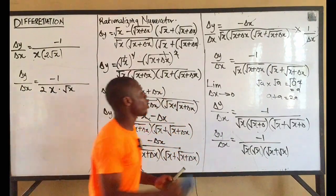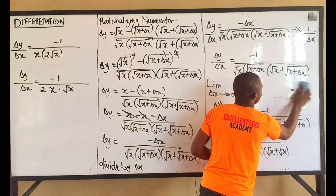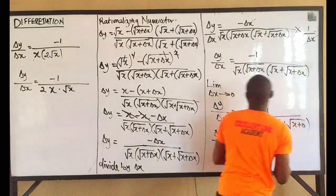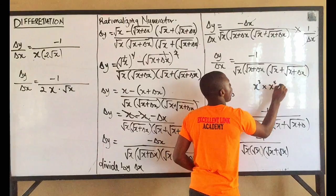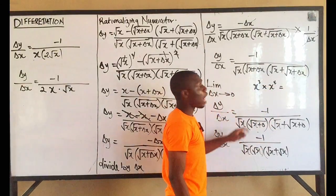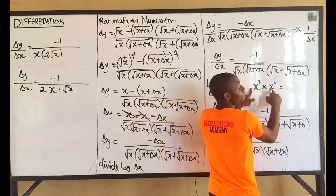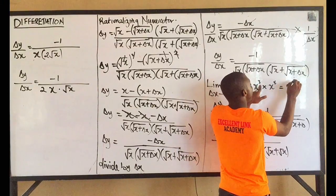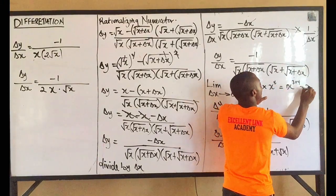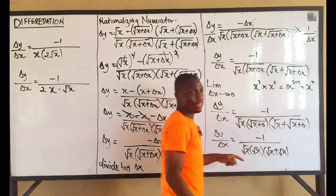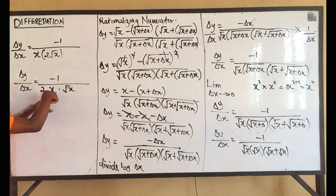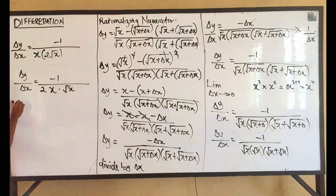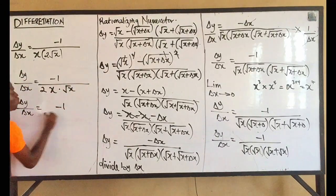From the idea of indices: x times root x — recall that root x is x to the power one-half, and x is x to the power one. Multiplying: x¹ times x^(1/2) equals x^(3/2) by adding the powers. So dy/dx equals minus 1 over 2x^(3/2).